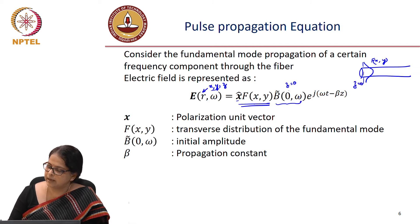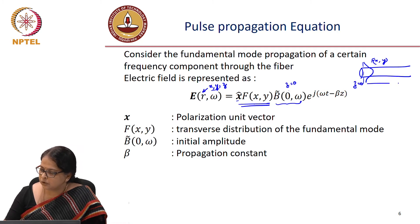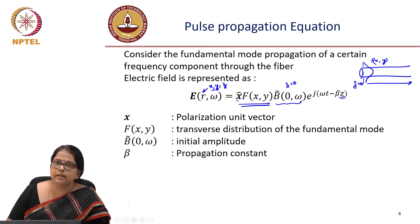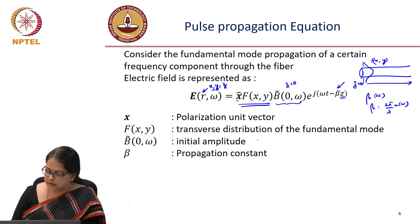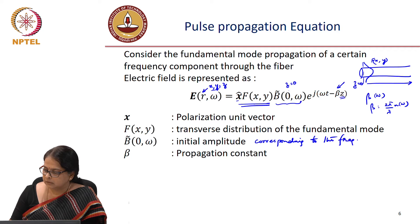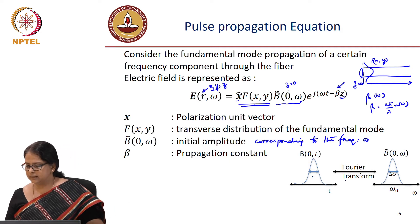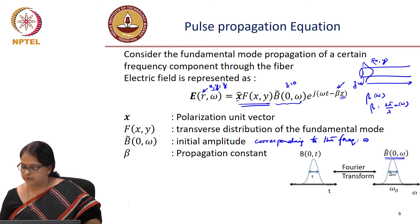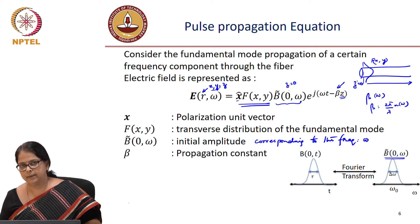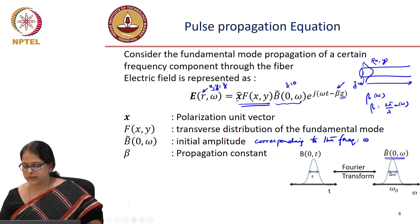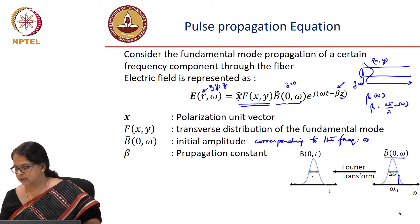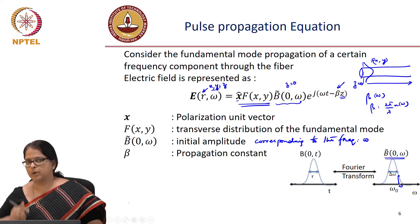At z equal to 0, the strength of frequency ω is represented by b(0,ω). This propagates through the length of the fiber where z is the evolving variable. This is the initial amplitude corresponding to frequency ω, and beta is the propagation constant. If you are trying to transmit a pulse at the beginning of the fiber, you have a certain time profile and correspondingly a certain frequency distribution. What is written here is the way one such frequency ω evolves as it propagates through the fiber.